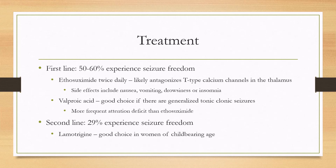For treatment of childhood absence epilepsy, there are two first-line medications, and about 50 to 60% of patients will experience seizure freedom. Ethosuximide is the first one — it's an oral medication thought to work on T-type calcium channels in the thalamus. Side effects include nausea, vomiting, drowsiness, or insomnia.